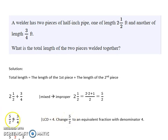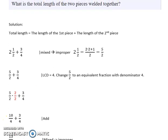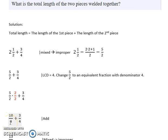We already have denominator four with the fraction three over four, so we don't need to do anything with that fraction. But we do need to change five over two to an equivalent fraction with denominator four. To make two into four, we multiply by two, and we must do the same thing to both numerator and denominator. So we multiply both by two: two times two gives us four in the denominator, and two times five gives us ten in the numerator. So five over two is equivalent to ten over four.